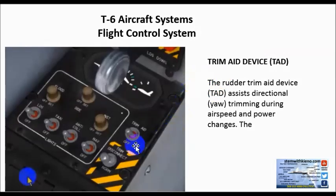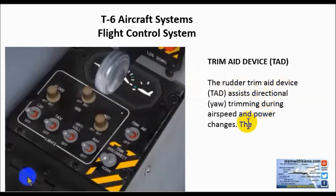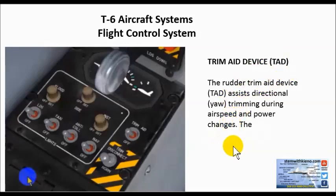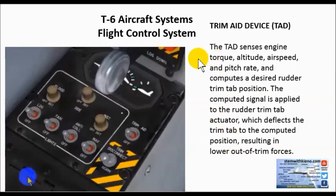We have the trim aid device — here's the panel-mounted switch in the simulator, which you could see in the real aircraft as well as the trim disconnect. The rudder trim aid device assists directional yaw trimming during airspeed and power changes. As you throw the throttle forward and pull it backward, there are forces that increase or decrease, and what this trim aid device does is make adjustments. The trim aid device senses engine torque, altitude, airspeed, and pitch rate, and computes a desired rudder trim tab position. The computer signal is applied to the rudder trim tab actuator, resulting in lower out-of-trim forces — the aircraft kind of helps you out.